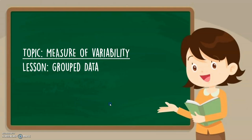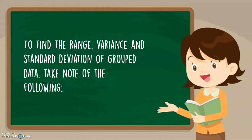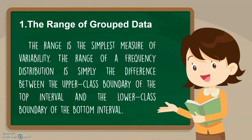Measure of variability for grouped data. To find the range, variance, and standard deviation of grouped data, we have to take note of the following. First, we have the range of grouped data. When we say range, this is the simplest measure of variability. Remember that the range of a frequency distribution is simply the difference between the upper class boundary of the top interval and the lower class boundary of the bottom interval.